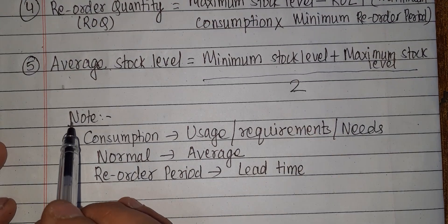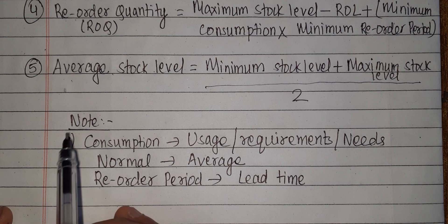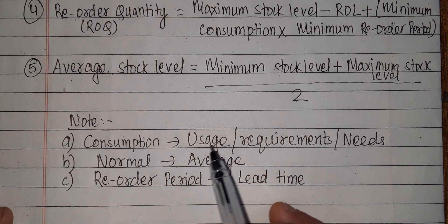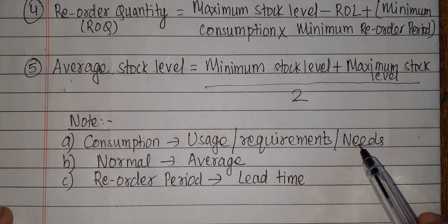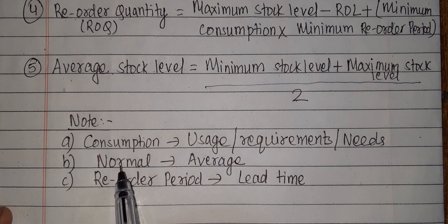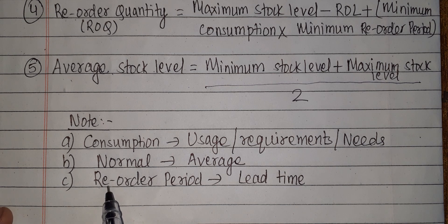Note: consumption can mean usage, requirements, needs, or needed. Normal means average. Reorder period means lead time. These are the key terminology equivalents for this chapter.